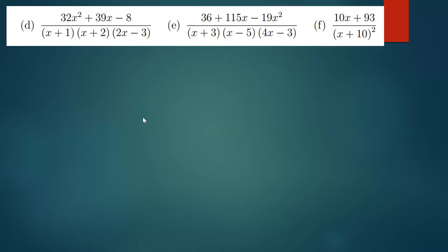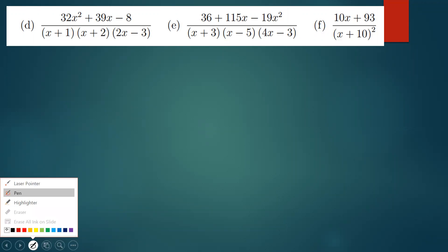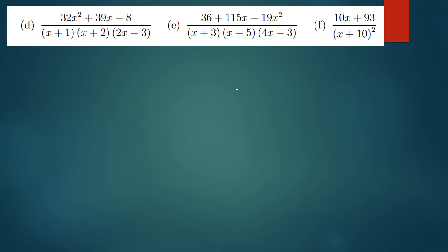The question here involves F, which is a partial fraction. We have been taught to express this into its partial fractions. The question is 10x plus 93, and it has repeating factors.